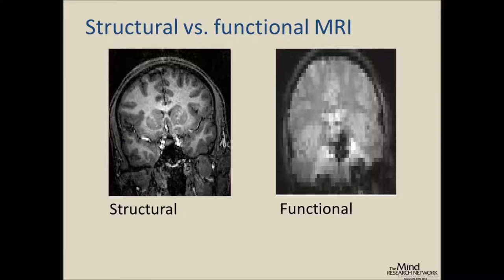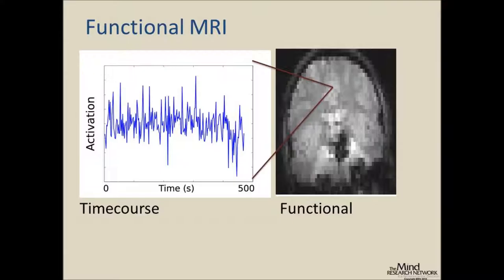On the left we have a structural image — that's a static picture of the brain. On the right we have a functional BOLD image. It's blurry, but by trading off resolution we're getting a dynamic activation time course. So instead of a static image, we're getting a picture of dynamic brain activity as it changes over time.